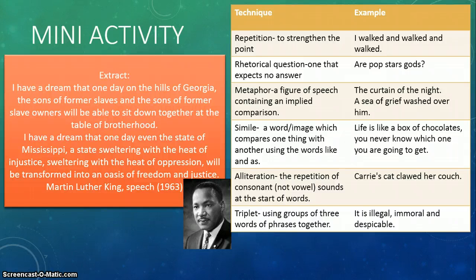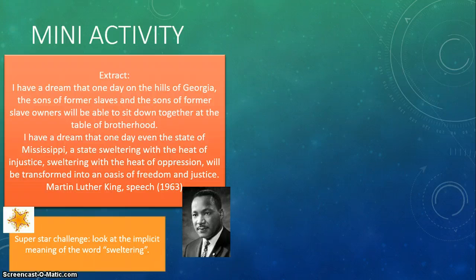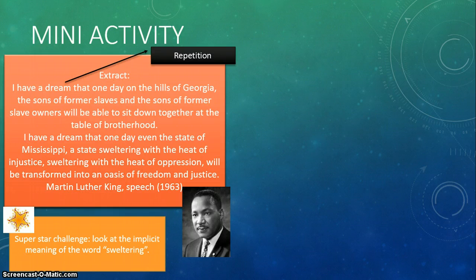Okay, welcome back to the screencast. I hope you were able to complete this very short activity. Now we're going to go through some of the answers and see if you got the same results as I did. The first device that really stood out to me was repetition. There are multiple sentences and phrases being repeated. One of them is 'I have a dream.' This shows that the dream has not yet been reached — he has a dream, not had a dream. It's present tense, so presently Martin Luther King has a dream.